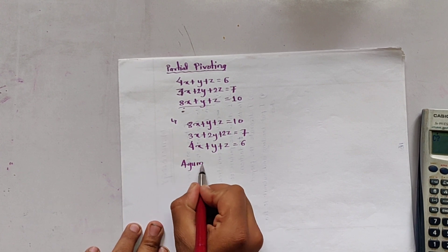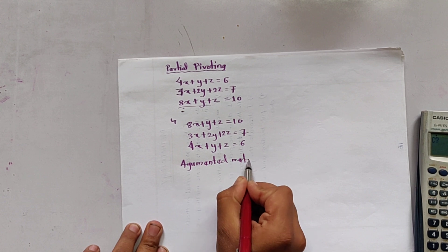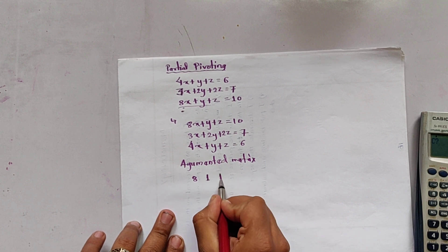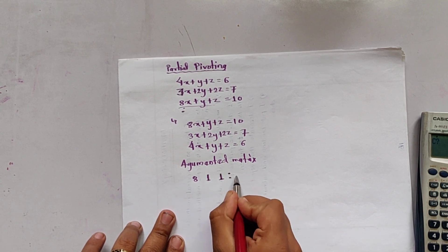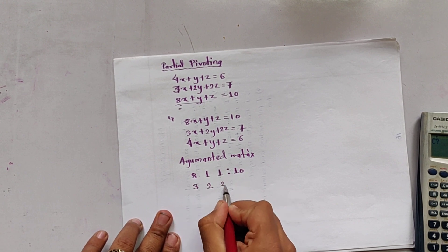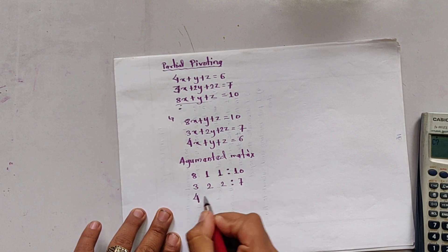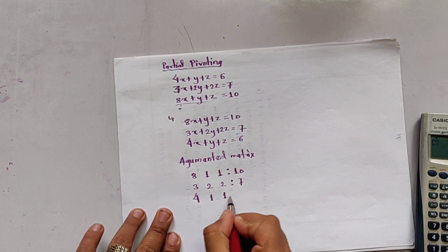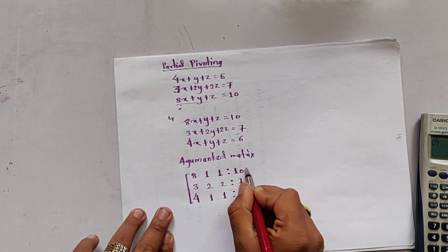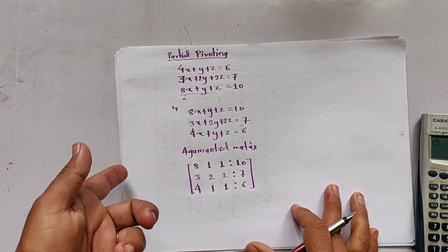The augmented matrix is: row 1: [8, 1, 1 | 10], row 2: [3, 2, 2 | 7], row 3: [4, 1, 1 | 6]. From this augmented matrix we follow the previous Gauss elimination rule to make the entries below the pivot equal to zero.